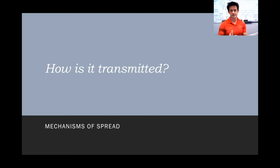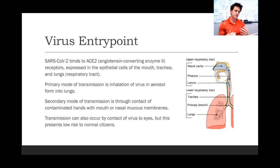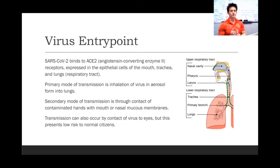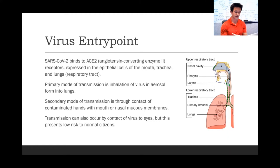Let's talk about how this disease is spread. SARS-CoV-2, as we've mentioned previously, binds to ACE2 — angiotensin-converting enzyme 2 — receptors, which are expressed in the epithelial cells of the mouth, trachea, and lungs, or the respiratory tract.